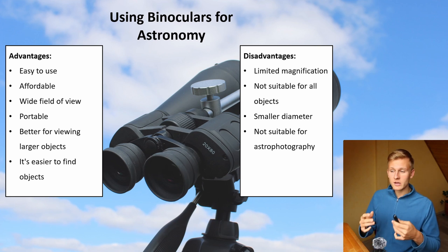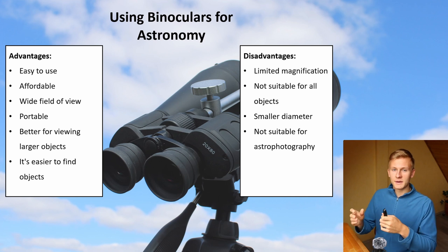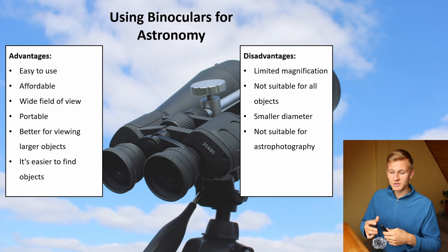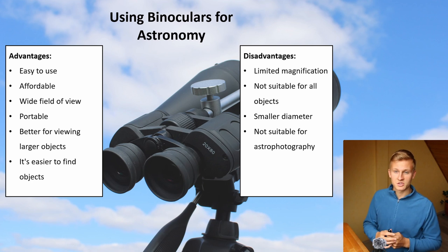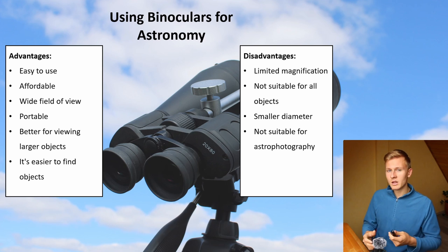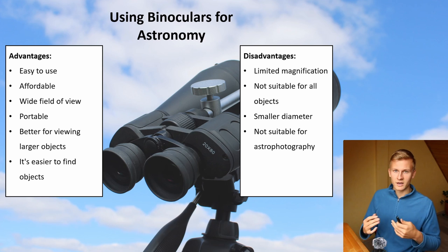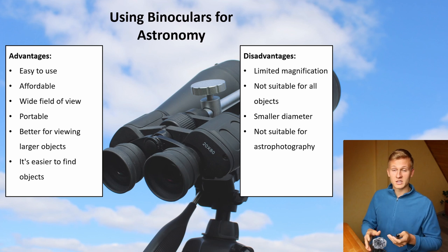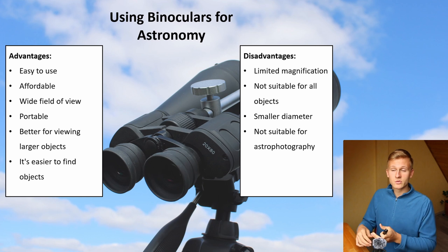Now to my summary. If you're planning to get into astronomy and observe objects in the night sky but don't want to invest hundreds of euros into your setup, then binoculars are the perfect way to get started. They are easy to use, they are affordable, they are portable, and it's very easy to find objects in the night sky. I would definitely recommend starting with binoculars into astronomy. But if you're planning to get a closer view of planets, then I would rather go with a telescope.